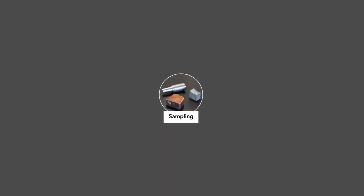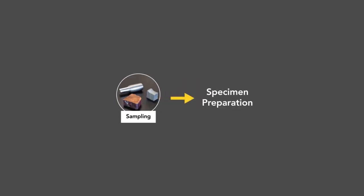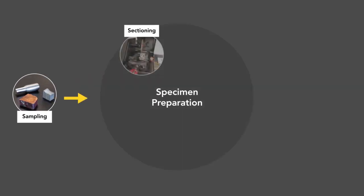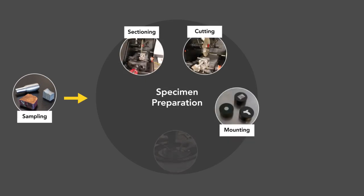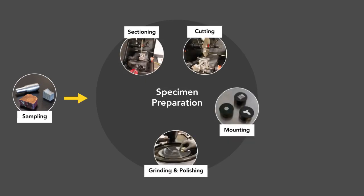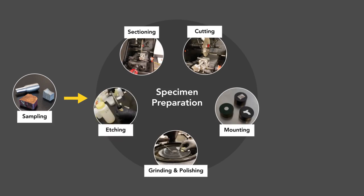The basic steps in metallographic analysis include sampling, specimen preparation — which involves sectioning and cutting, mounting, planar grinding, rough and final polishing, and etching.